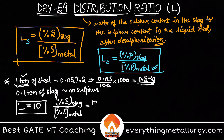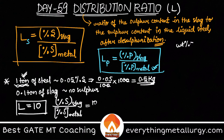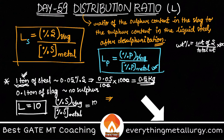We need to find the final sulfur content in the steel after desulfurization. Weight percentage equals weight of sulfur divided by total weight, multiplied by 100. We need to write the weight percentage of sulfur in slag divided by weight percentage of sulfur in steel. Since we don't know how much sulfur is going into the slag, let's call it x — that is, x is the weight of sulfur going into the slag.